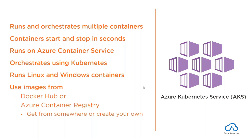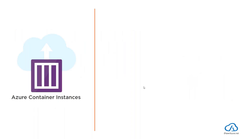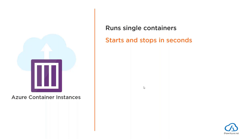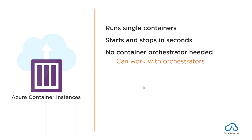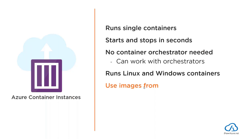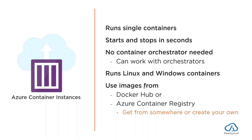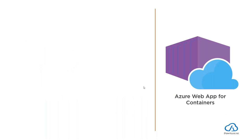Azure Container Instances runs single containers, as opposed to AKS which you use for multiple containers. It also starts and stops in seconds. You don't need an orchestrator, but you can hook it up to Kubernetes or another container orchestrator if you want. It runs Linux and Windows containers and you can use images from Docker Hub, Azure Container Registry, or anywhere else.